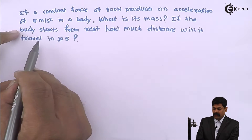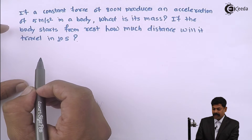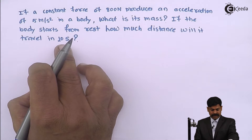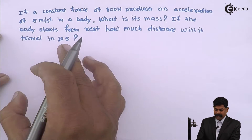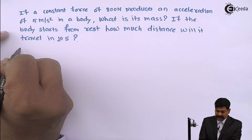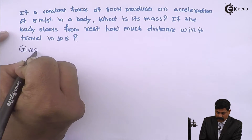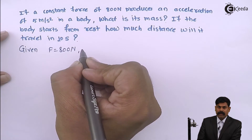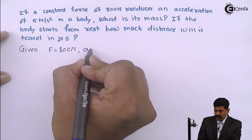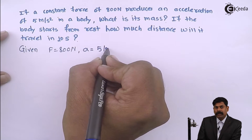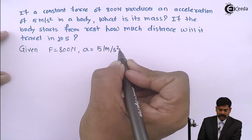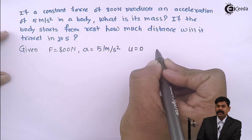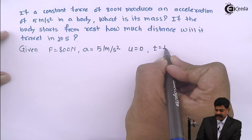We have to find out the mass and the distance traveled by the body in 10 seconds. Given: force is 800 newton, acceleration is 5 meter per second square, initial velocity u is zero, and time t is 10 seconds.